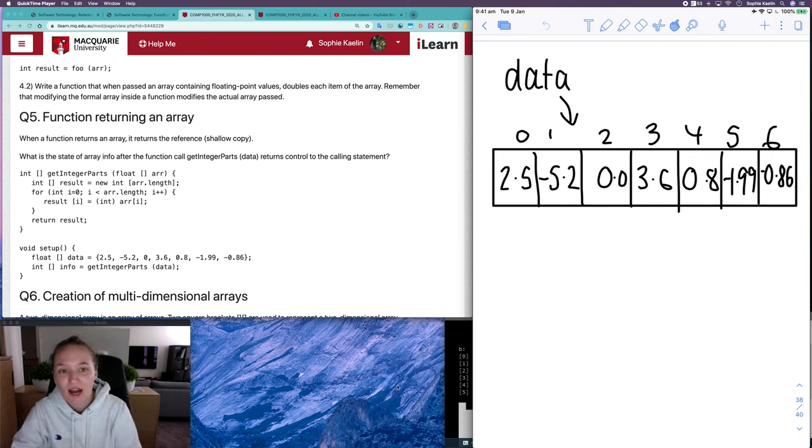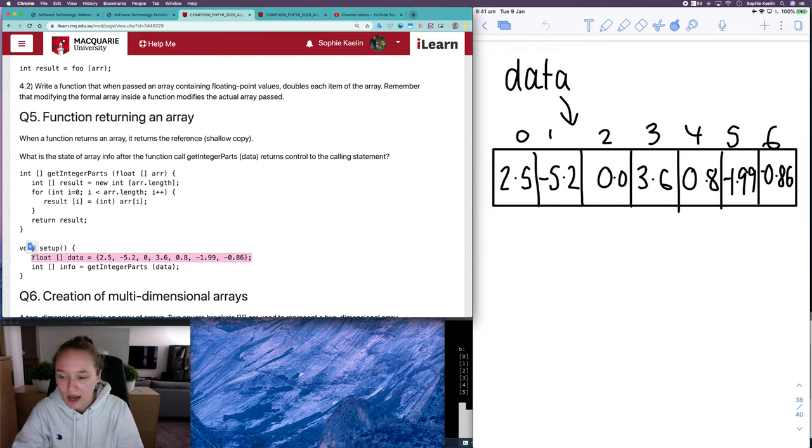So I already have my data array set up so I've already done this line here where I have a float array called data with these values. There are seven items here so the arrays of length 7